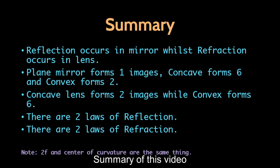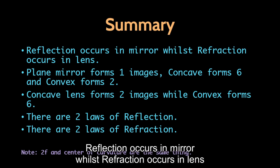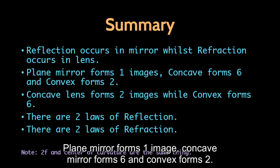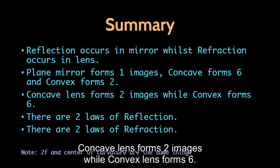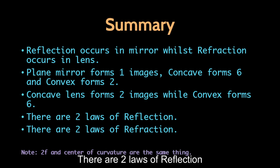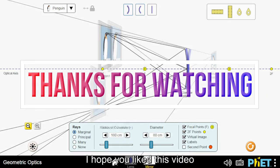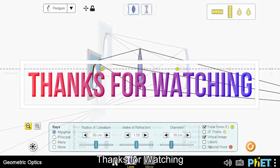Summary: Reflection occurs in mirrors while refraction occurs in lenses. Plane mirror forms one image, concave mirror forms six and convex forms two. Concave lens forms two images while convex lens forms six. There are two laws of reflection and two laws of refraction. Thanks for watching.